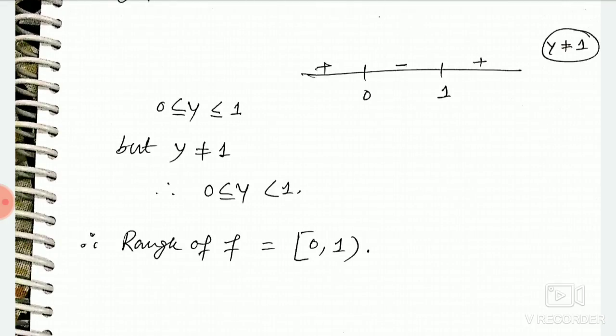Therefore, range of f equals [0, 1). 0 included, comma 1. 1 is not there. Between 0 and 1, whatever real numbers will come, all will be there including 0.